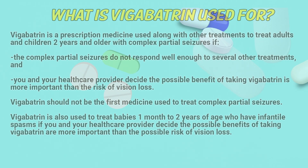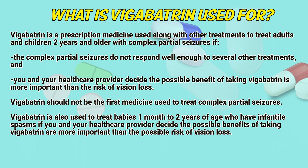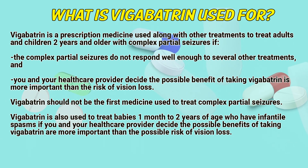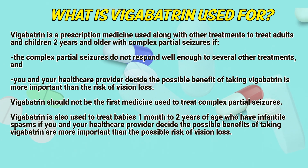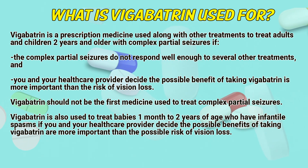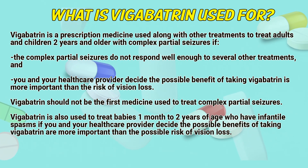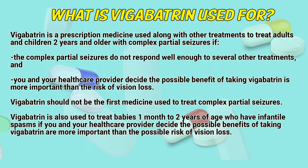What is Vigabatrin used for? Vigabatrin is a prescription medicine used along with other treatments to treat adults and children two years and older with complex partial seizures. If the complex partial seizures do not respond well enough to several other treatments, and you and your healthcare provider decide the possible benefit of taking Vigabatrin is more important than the risk of vision loss.